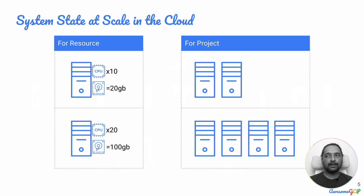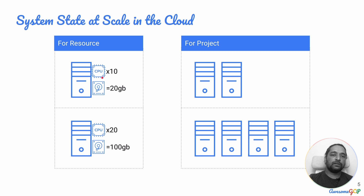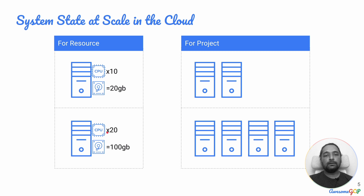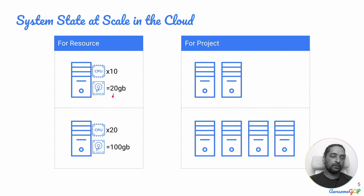When you take system state at the scale of the cloud, you're looking at various things. For a resource — a virtual machine, for example — you could say: I need a virtual machine with 10 CPUs and 20 GB of storage. That would be the current state. And the state could change — you might say you want to increase the CPUs from 10 to 20 and the storage from 20 GB to 100 GB, which is a state transition.